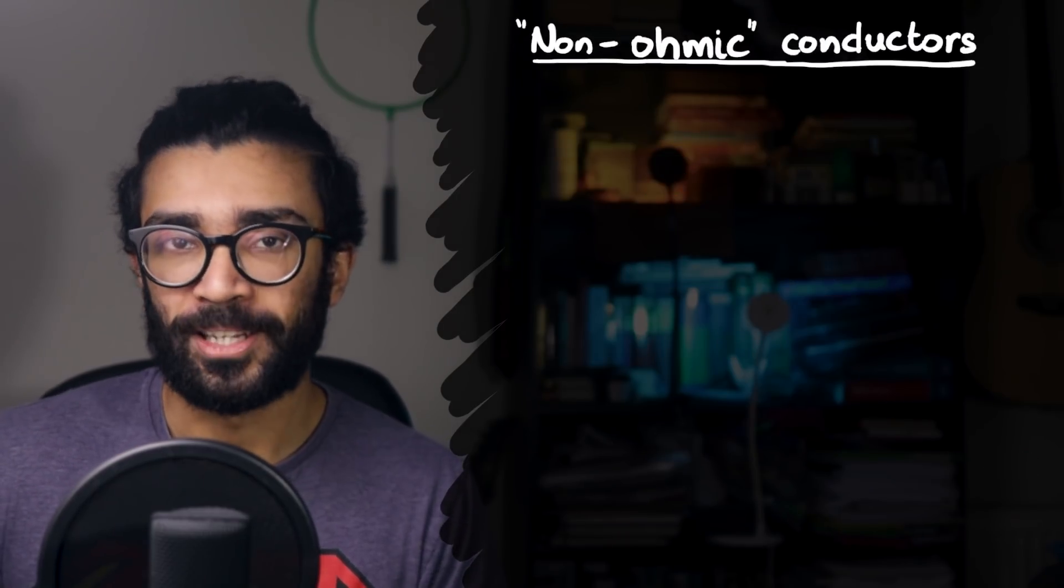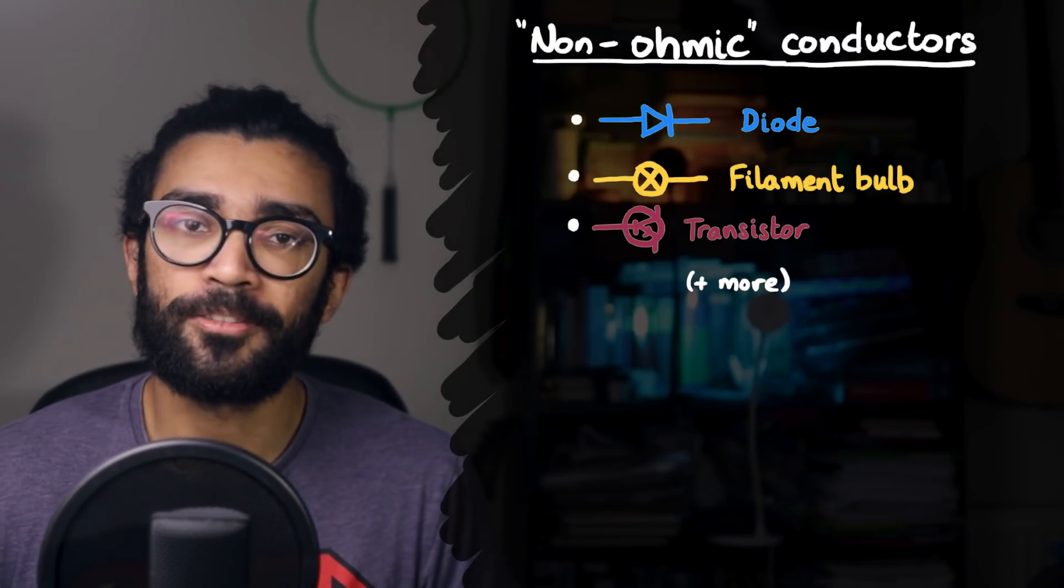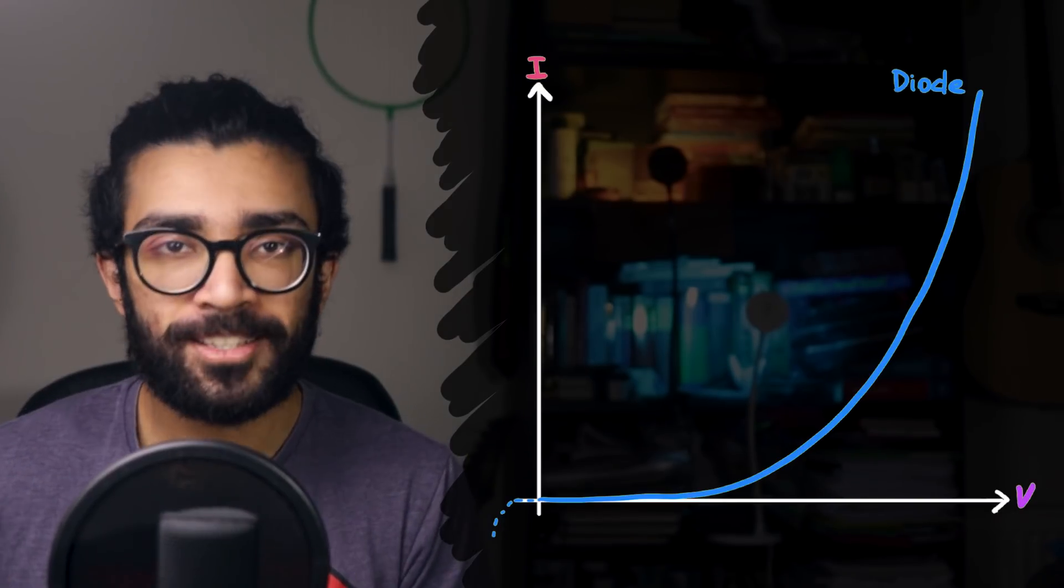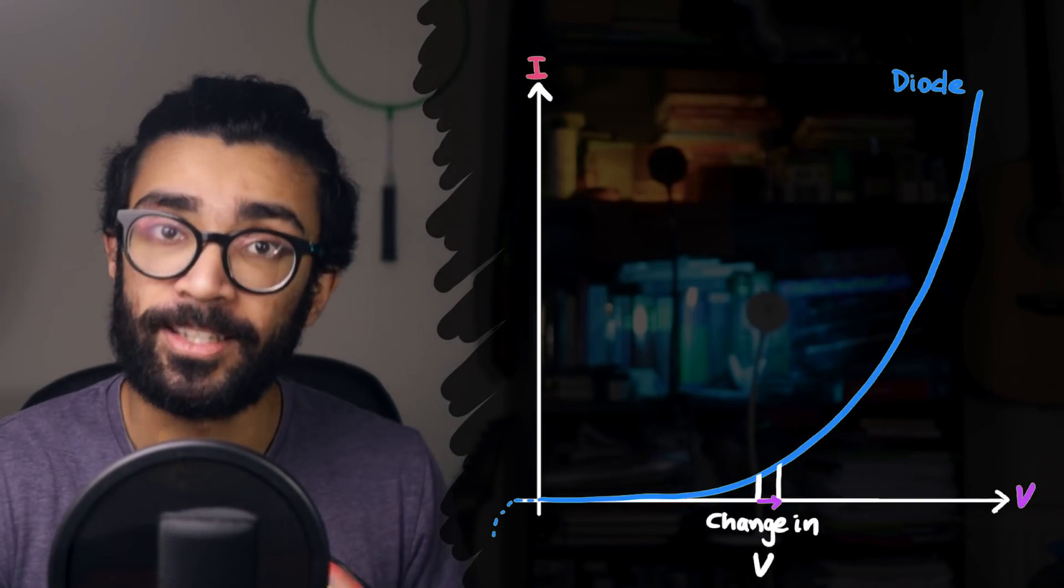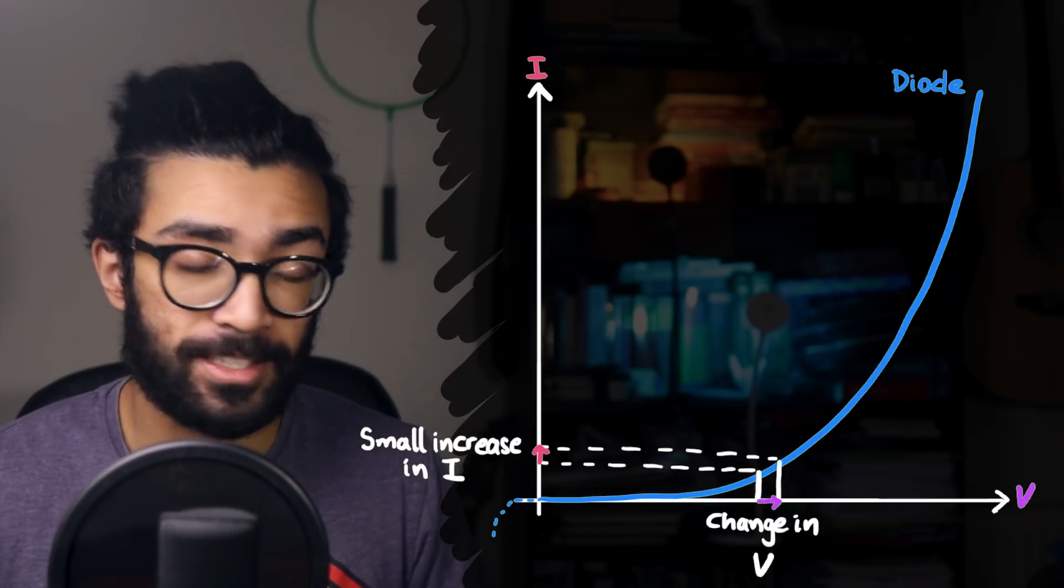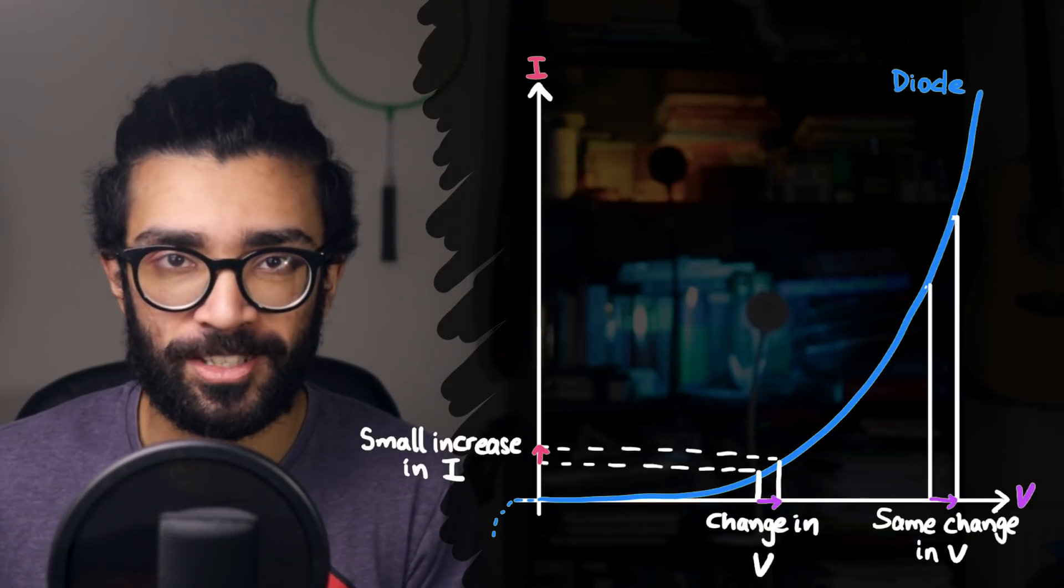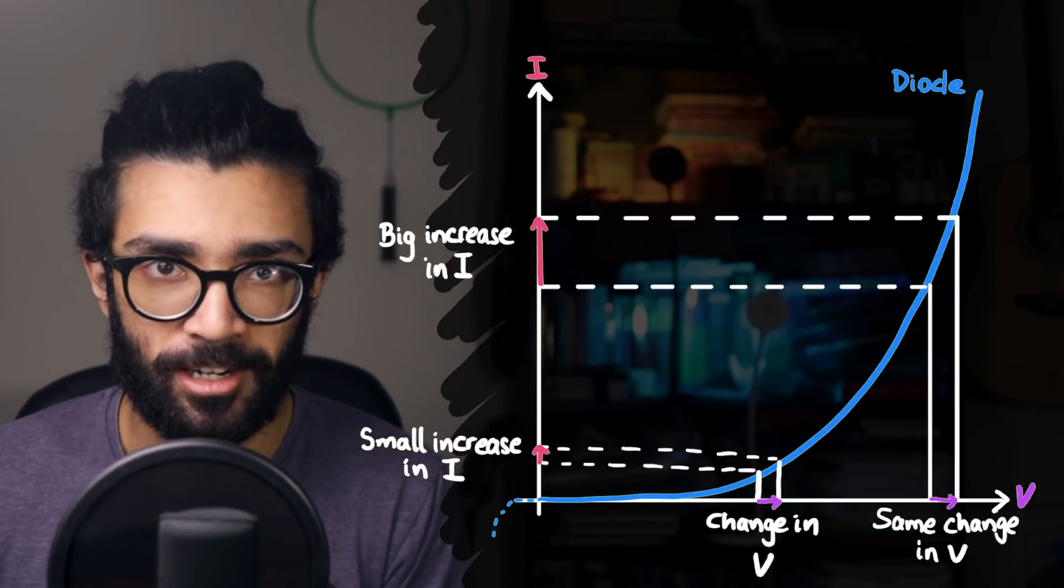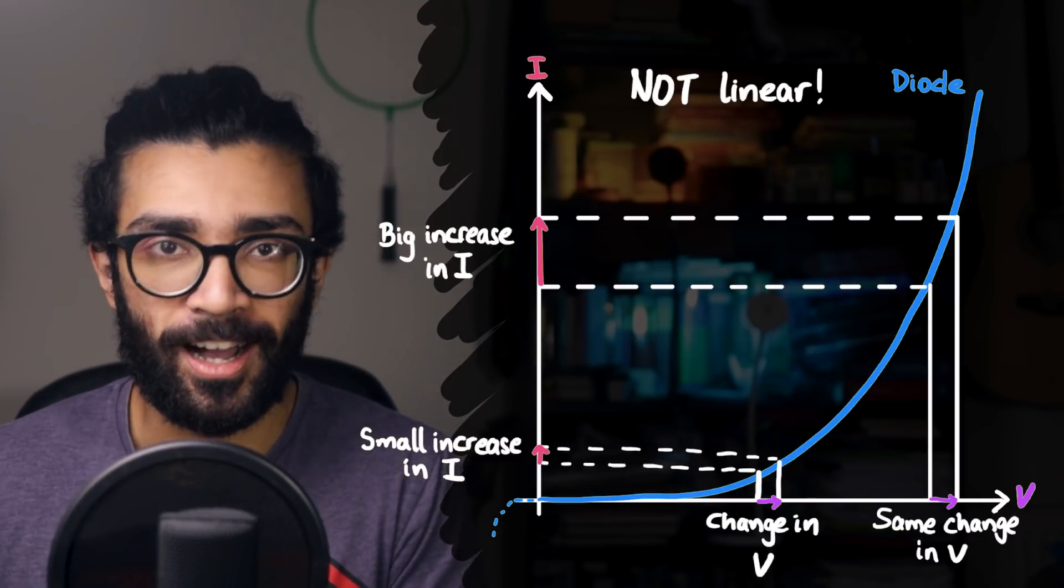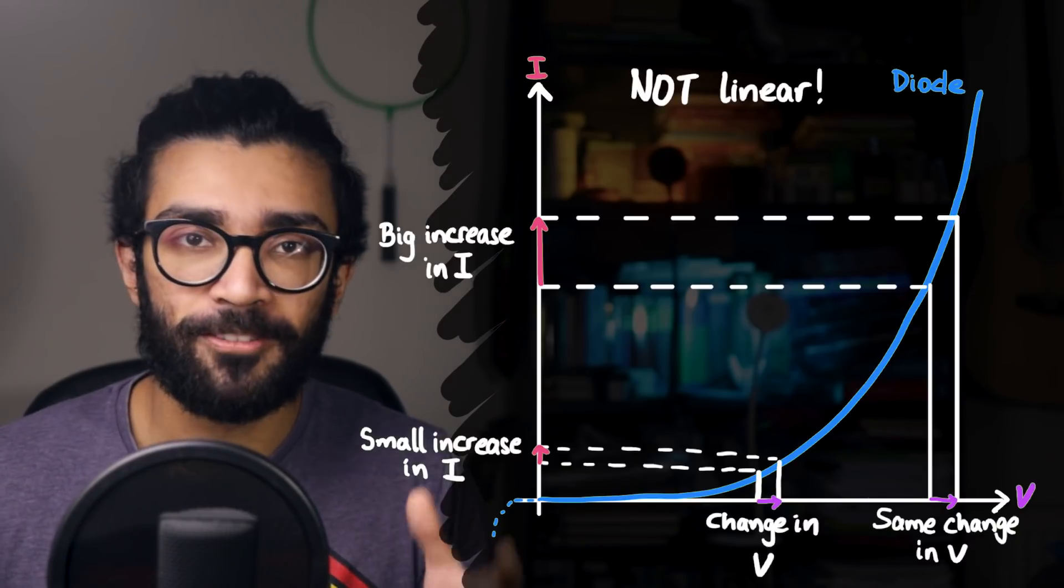But what about non-ohmic conductors? Things like diodes, for example. A diode's IV graph might look something like this, rather than being a straight line. And from this graph, we can basically see that in this region, a small change in voltage doesn't result in a huge change in current. But in a different region, the same small change in voltage results in a big change in current. This is no longer a linear relationship. V is no longer proportional to I. And R, the resistance, is no longer constant.